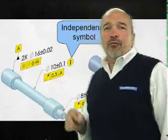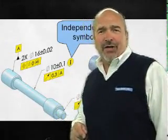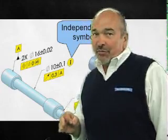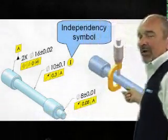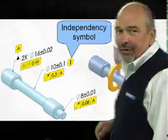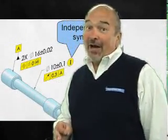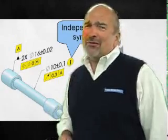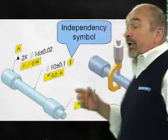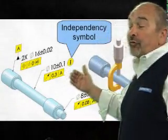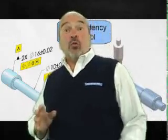This means that the form control of this feature is totally independent of the size limits. If the size limits are met with a measurement that ignores form variation, like this two-point micrometer measurement, great. But be careful. If the limits of size are not controlling the form, you better make certain something else will. On this drawing, the runout tolerance is not only locating the feature, but it's also controlling the circularity and straightness of the feature.